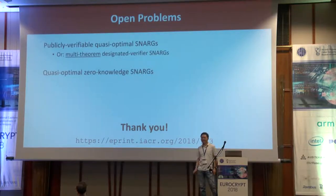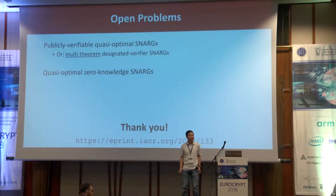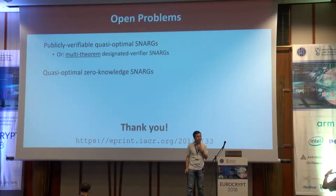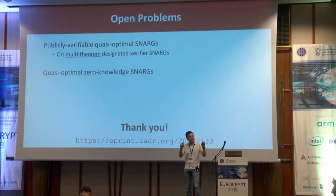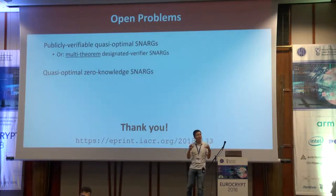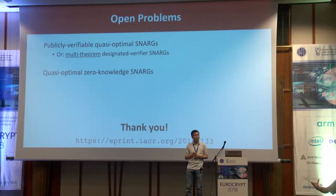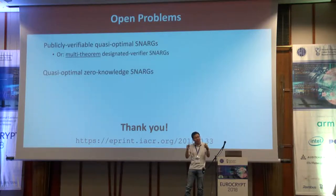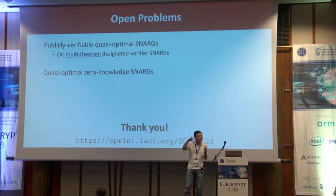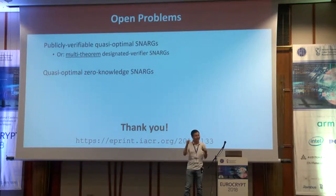Question from audience: In the decomposition of the circuit into constraints, the parameter L — you said it depends on the security parameter? Response: Yes, in a robust decomposition we take a large circuit C and decompose it into order λ constraints. Question: Would it be more efficient if it depended on the circuit size instead? Response: That's a good question. When we compile to a preprocessing SNARK, we have to pack all these different constraint functions into a single ciphertext. So if the number of constraints is proportional to the circuit size, then we'd have to encrypt a vector of length proportional to the circuit size for each ciphertext in the CRS, making each ciphertext no longer succinct — it would be proportional to the circuit size.